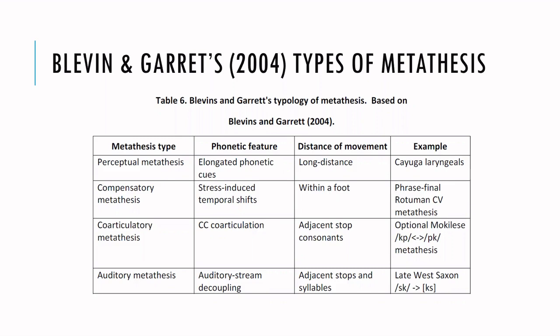The third type is co-articulatory metathesis, where the feature affected is consonant-consonant co-articulation involving adjacent stop consonants — the order of the two consonants may be switched because of the perception that they are being pronounced simultaneously. And lastly, auditory metathesis, where the phonetic feature affected is auditory stream decoupling with adjacent stops in syllables — for example in late West Saxon and in modern English with the verb ask, which is often metathesized to be ax.